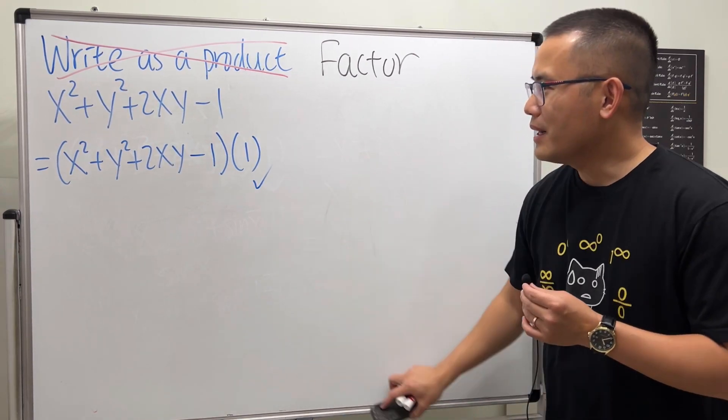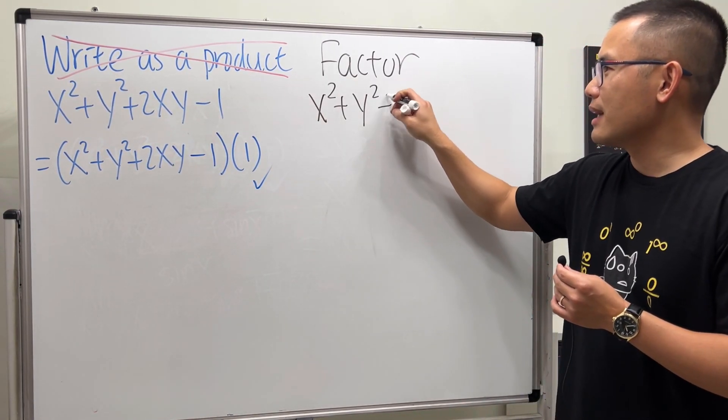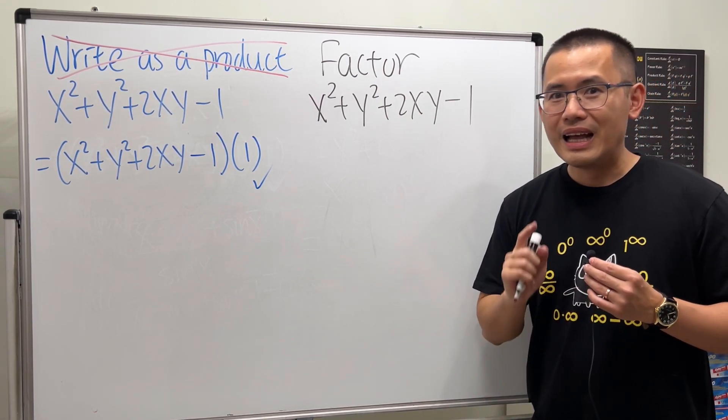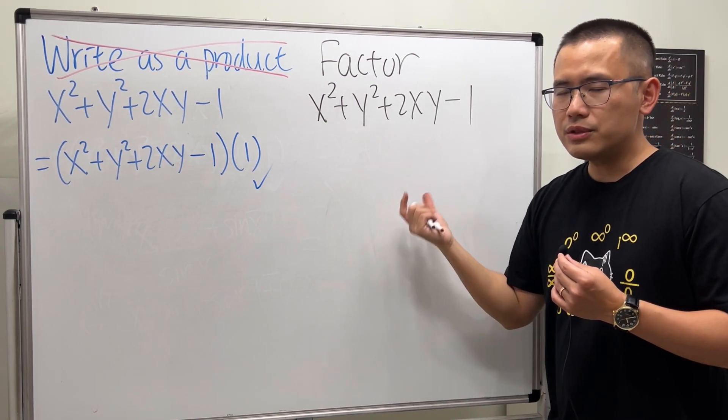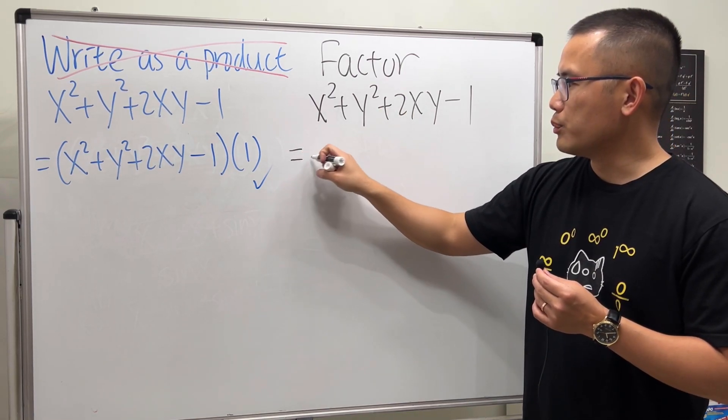So we are going to see how to factor x²+y²+2xy-1, and I'll provide all the details for you. Firstly, the first three terms are actually a perfect square. I can put this in the middle to make it more clear.